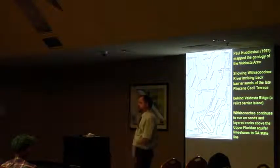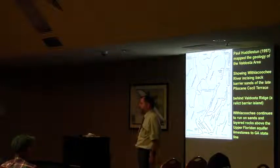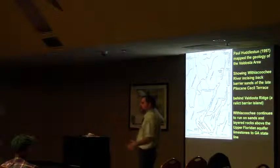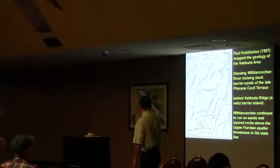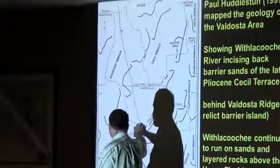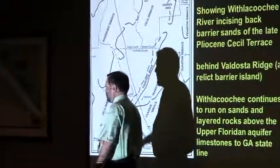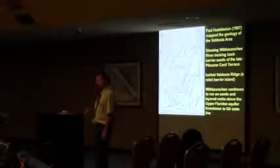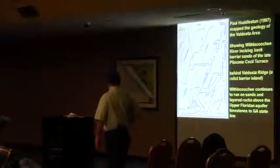The Whitlacoochee River, and most of these rivers that are part of this network, their courses sometimes either go in between these barrier islands, or they'll follow the course like the Whitlacoochee is doing here, behind this thing called Valdosta Ridge, which is basically an old barrier island. So it finds this course is a fairly easy one to take, rather than going across that ridge, and then it crosses there. There's a lot of control of those river channels by this topography of these old coastal features.